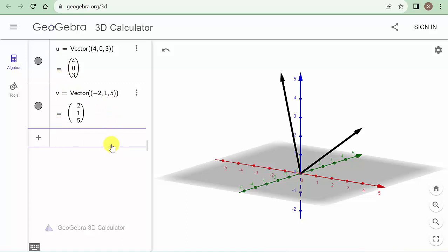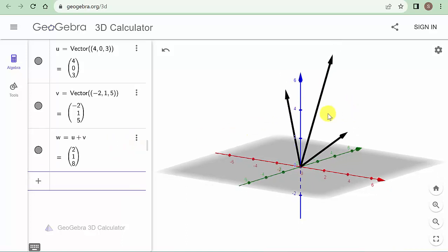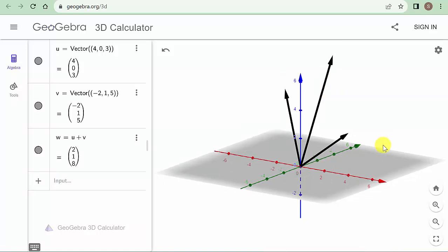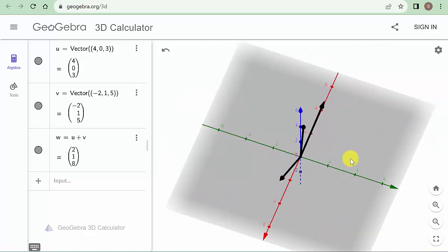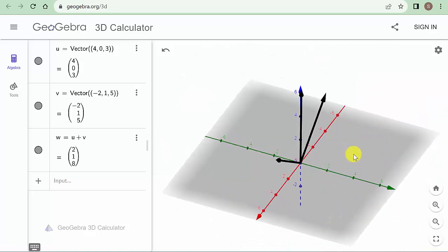So let's just do u plus v. And there it is. It gives us the sum of those two vectors. And you can kind of move this around and kind of look at it. There's the sum of those vectors.